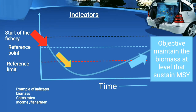Indicators' objectives are to maintain the biomass level that sustains the maximum sustainable yield. Our main purpose is to maintain maximum sustainable yield. Examples of indicators include biomass, catch rate, and income of fishermen. These are all indicators.